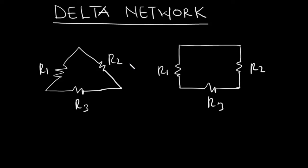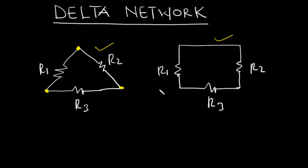Now let's talk about delta networks or delta connections. Three resistors are said to be in delta if the three resistors are connected end-to-end, as we see here. Notice that these two arrangements are all delta connections — sometimes you may see one form and other times the other. Since the resistors are connected end-to-end, we have a delta connection.